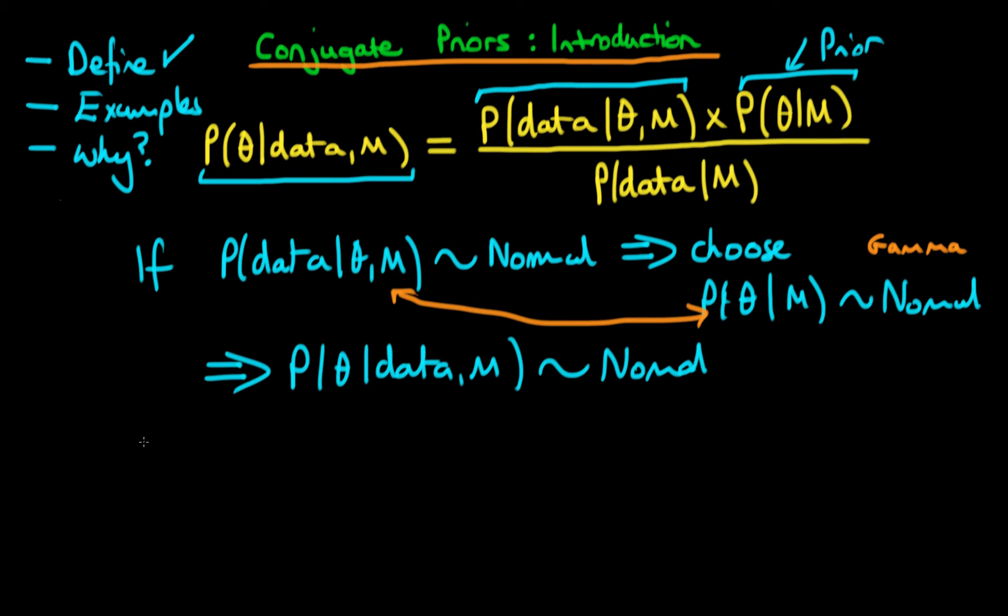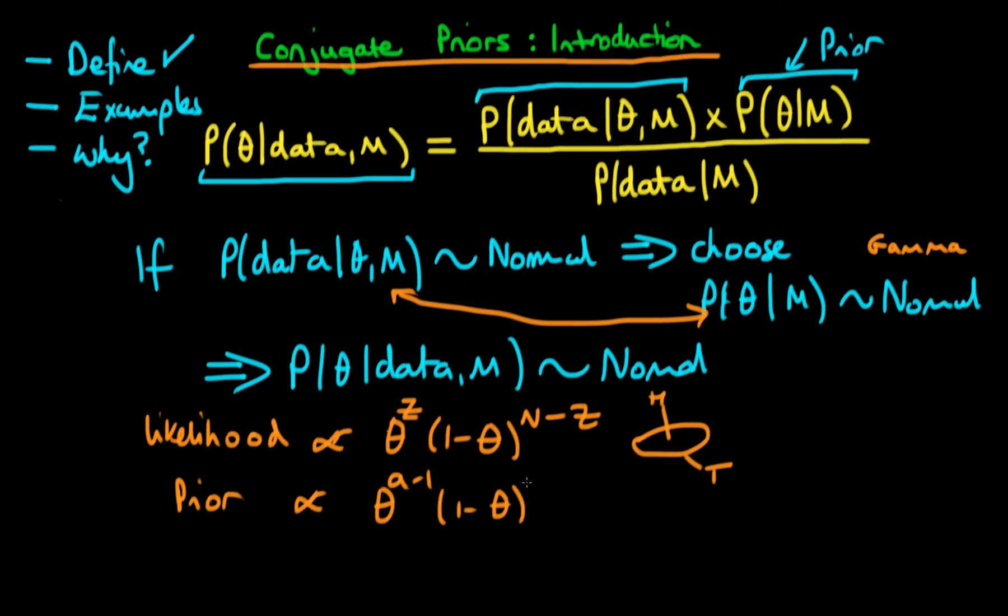And an example of this being the case whereby if we have a likelihood which is of the Bernoulli form, so it's theta to the power z times 1 minus theta to the power n minus z here, so we might be thinking about flipping a coin, for example, then the idea here is that if we choose a prior which turns out to be of the form theta to the power a minus 1 times 1 minus theta to the power b minus 1, which actually turns out is a beta distribution,